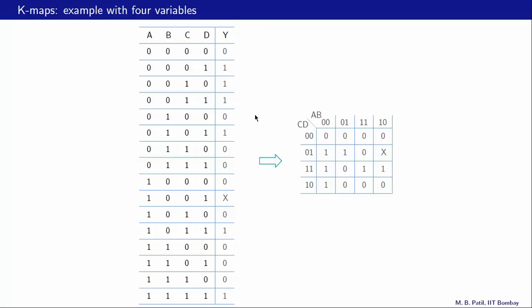Here is a K-map with four variables, so y is a function of a, b, c, and d. These values zero zero, zero one, one one, etcetera correspond to a and b; these values correspond to c and d. As we go from one column to the next there is only one change — for example from zero zero to zero one, b changes but not a; from zero one to one one, a changes but not b. Similarly, as we go from one row to the next there is only one change.